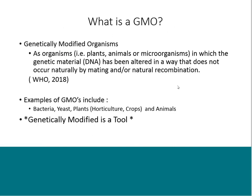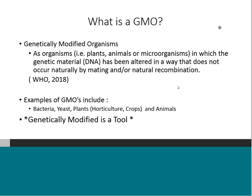The first thing I want to do is talk about what exactly a GMO is and what I'm going to define it as during this presentation. A lot of times when people are asked, 'What's a GMO?' they say, 'I don't know, but it's bad.' So let's define it right off the bat: it's a genetically modified organism — a plant, animal, or microorganism that has been genetically modified in a way that does not occur naturally through mating or natural recombination.